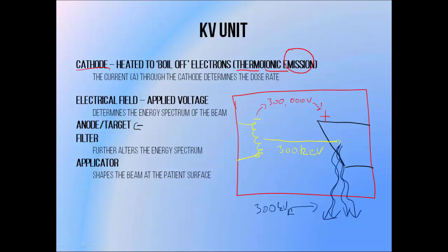This is because when an electron undergoes the bremsstrahlung interaction, the maximum amount of energy that it can lose in the form of a photon is the maximum amount of energy it has — in this case, that would be 300 kiloelectron volts. But it's far more likely that an electron won't lose all of its energy at once, and that it will produce a lower energy photon. So most of the beam will be made up of lower energy photons, which is why 300 is just the peak energy.